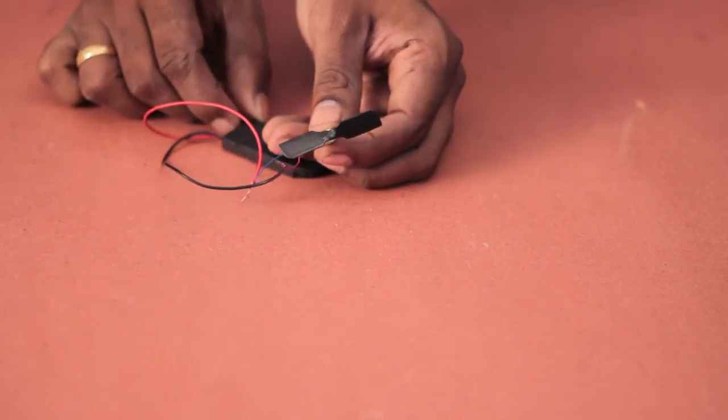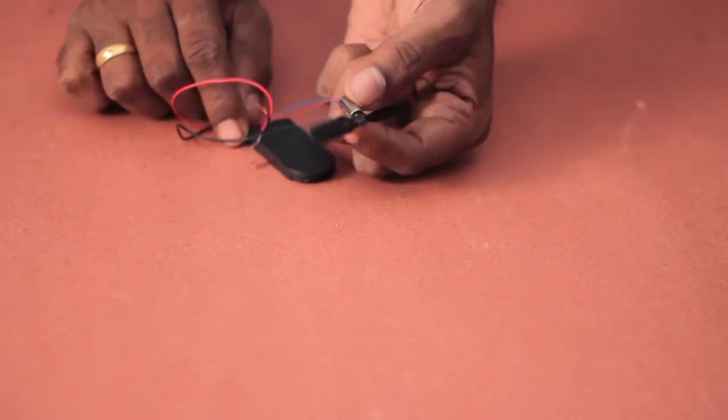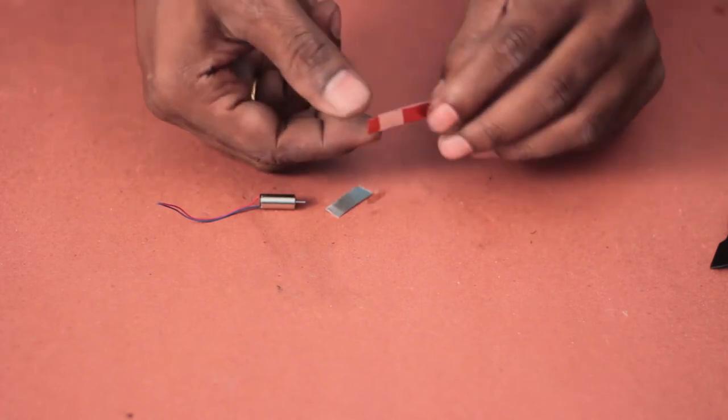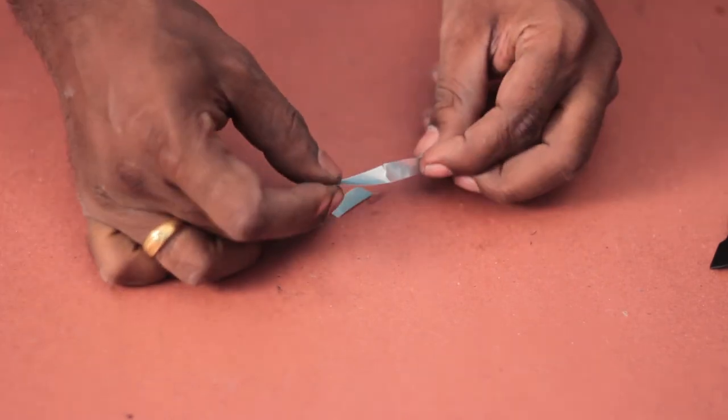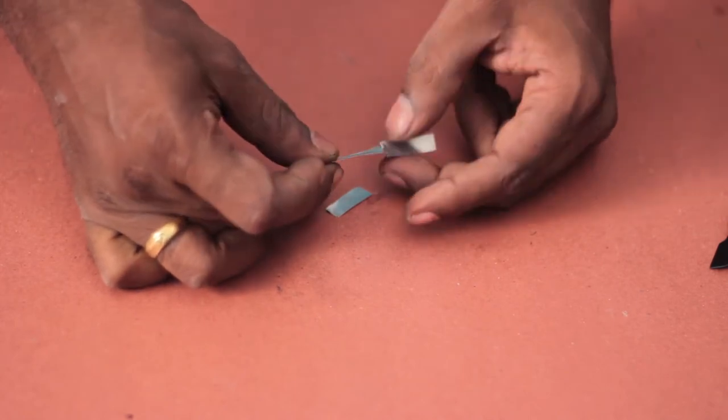Grab a tiny motor such as this and a tiny propeller. If you don't have one you can always make one with an aluminum can by cutting thin strips and twisting its ends like this. Then this can be glued to the motor shaft.